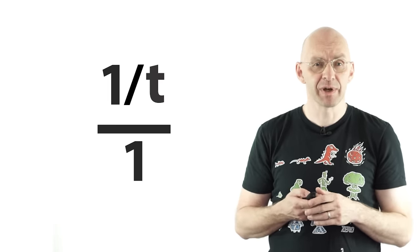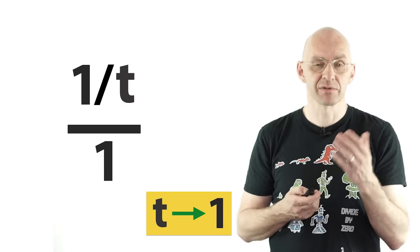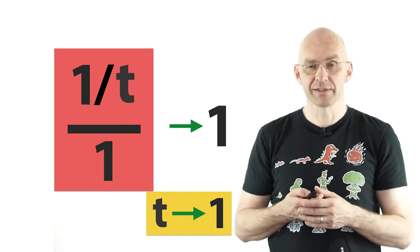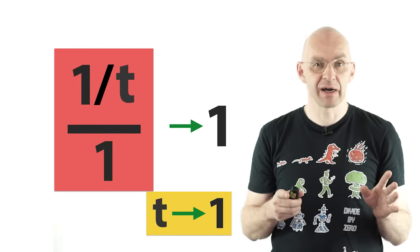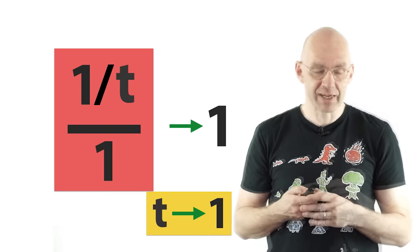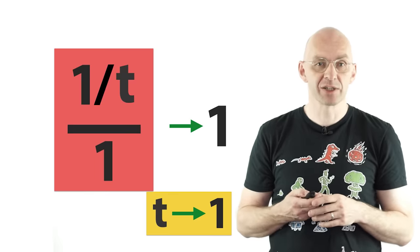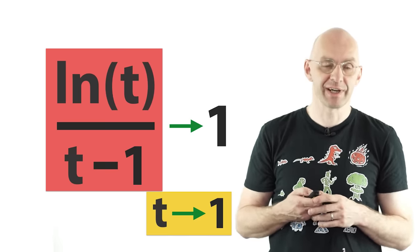And now you see what happens to this expression as t approaches the critical value. And of course nothing terrible happens here at all, this just becomes 1, right? And now if the functions that we're dealing with here are nice, differentiable, or check out the details in the calculus book, then we can actually conclude at this stage that what we're really interested in also goes to 1. Really, really nice trick.